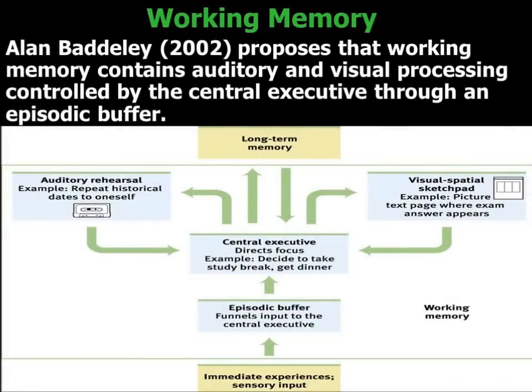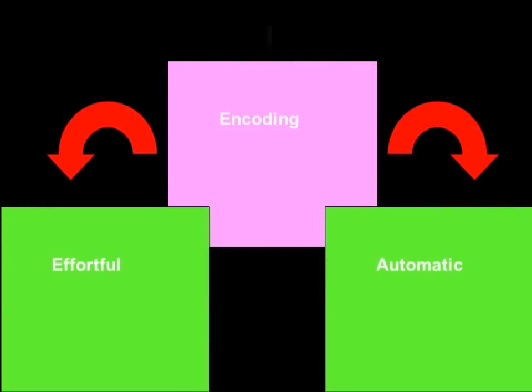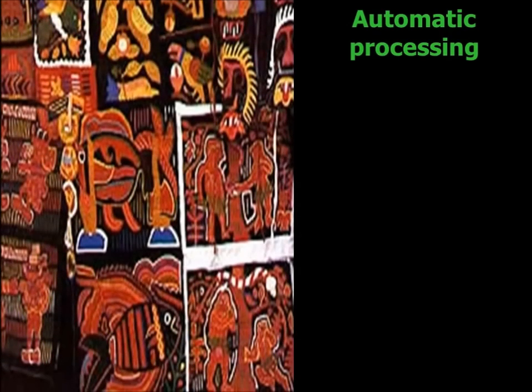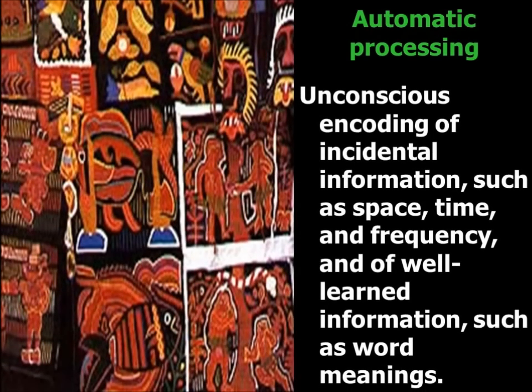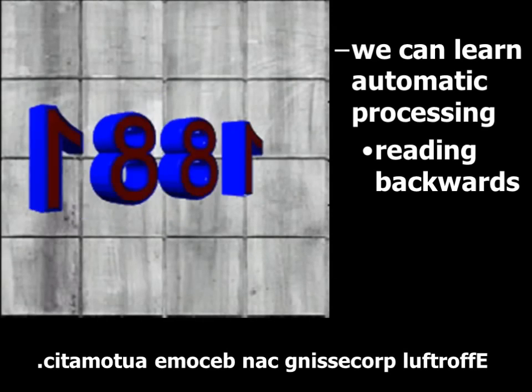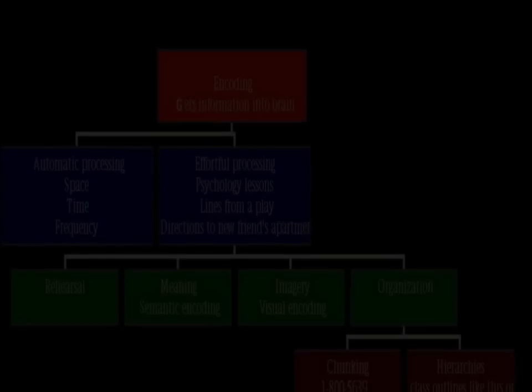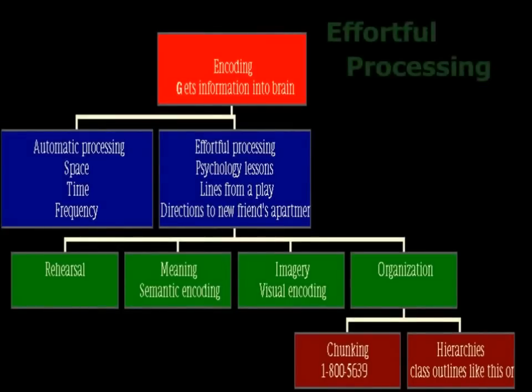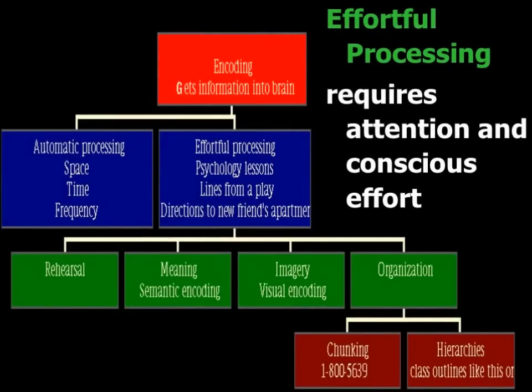Look at the idea of Ebbinghaus and some of the ideas he gave us, including the nonsense syllables he used to show the forgetting curve. Look at different encoding concepts: the next-in-line effect as a form of encoding failure, the spacing effect and how it can enhance encoding, and semantic, visual, and auditory encoding. We also looked at mnemonic devices and chunking to help us encode.